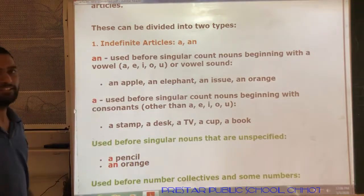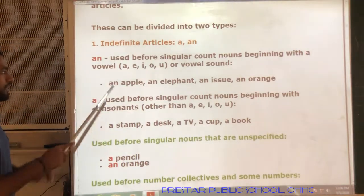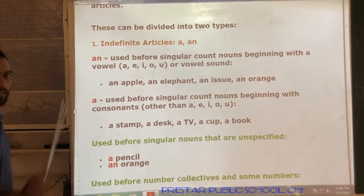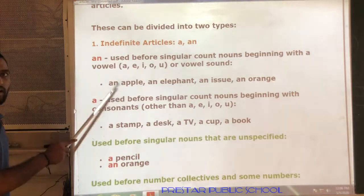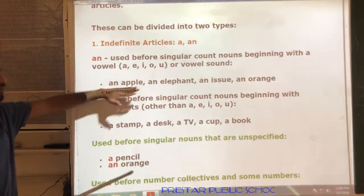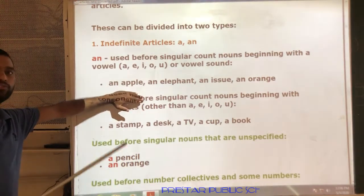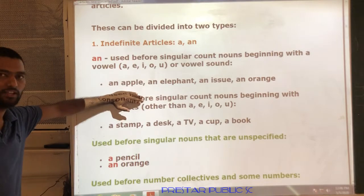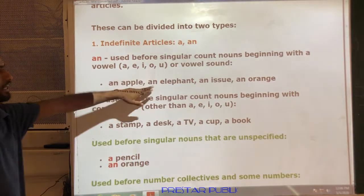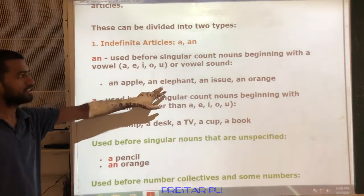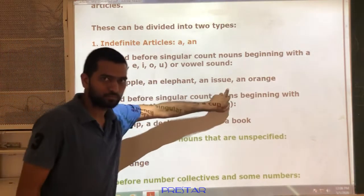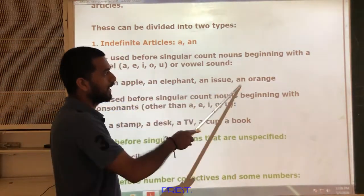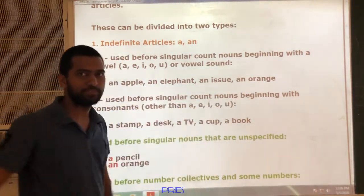Examples are given. See: an apple — the word apple starts with a vowel sound. Next, an elephant — this is also a vowel sound. An issue — this is also a vowel sound. An orange.